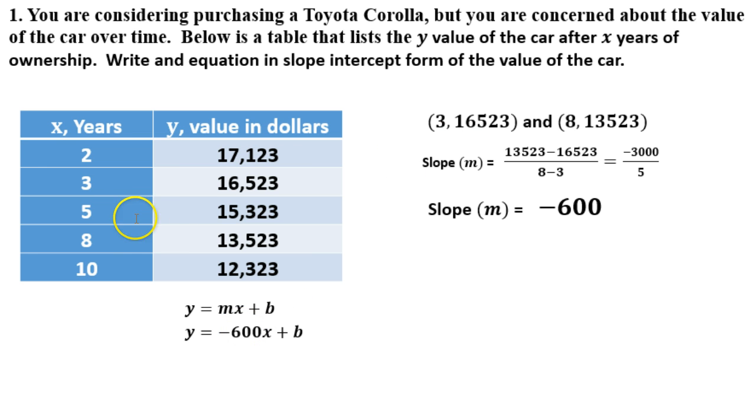I have x values and corresponding y values, so I can plug any of these in. It doesn't matter which one I do. Typically you'll want to use one of these two that you used, but you don't have to. For this one, I chose this first one here. My x value is 3, so I plug in 3 for x. My y value was 16,523, so I plug that in for y. Now I'm going to solve it for b, which will tell me what my y-intercept is.